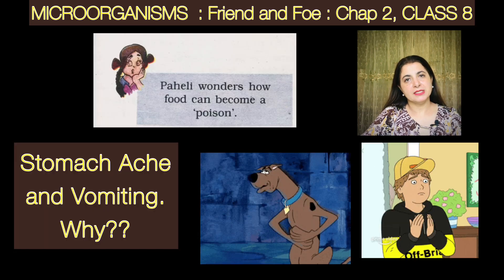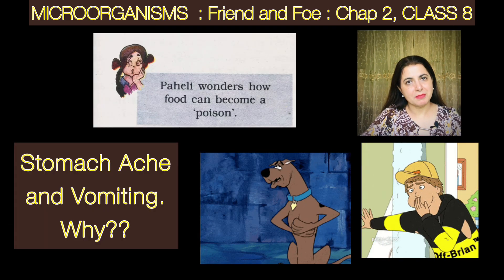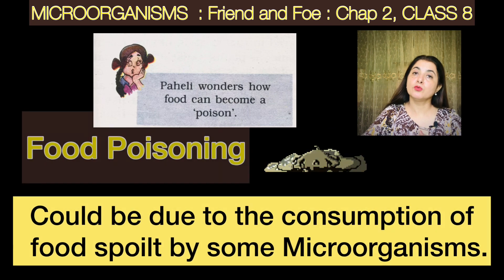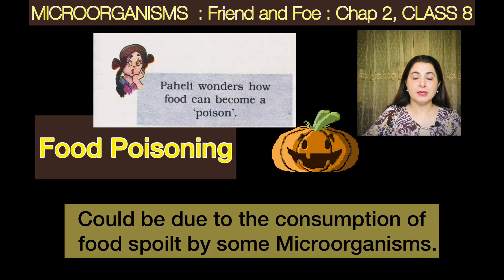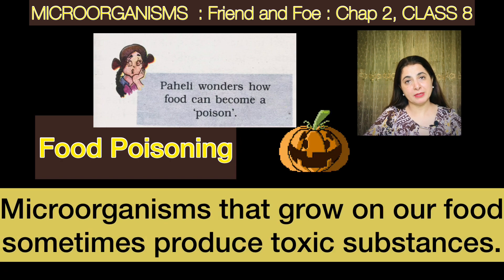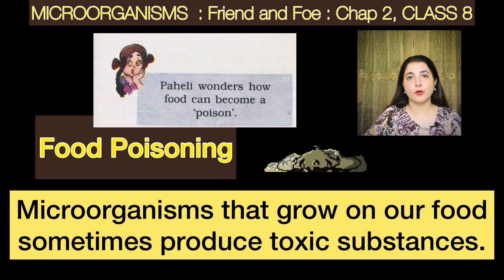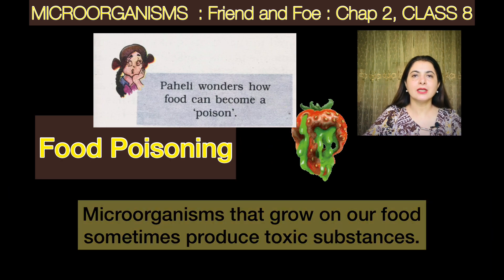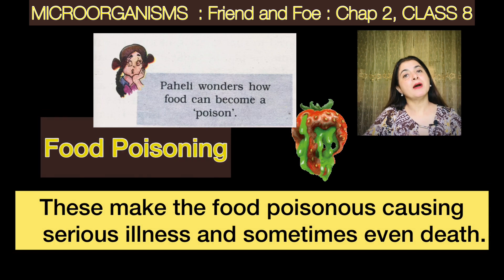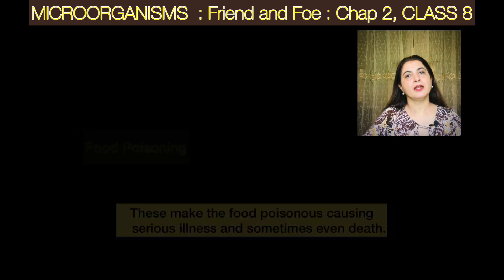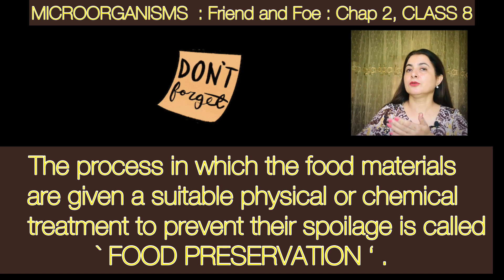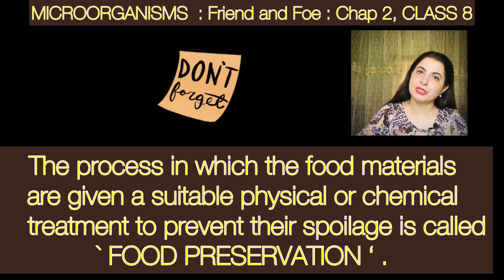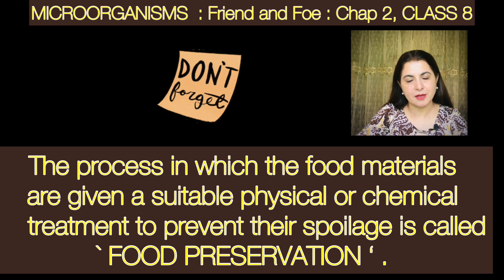At times when we go to a party, we sometimes come back with a stomachache, vomiting, and loose motions. The doctor tells us we have food poisoning. It means that the food we ate had something spoilt in it. And what spoils it? Microorganisms. Our effort should be to ensure that the food we eat is of good quality, so we adopt certain methods and measures to preserve the quality of our food.